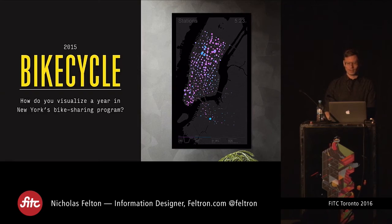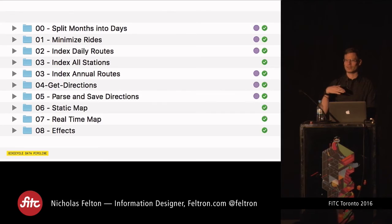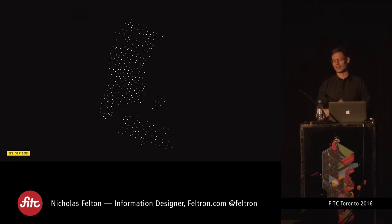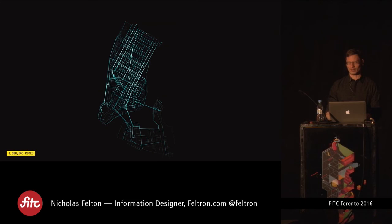For the Bike Cycle project — this visualization of the bike sharing system — I had to build a whole data pipeline to take the CSVs from the website and turn them into something usable. They give you monthly data, so I had to split it into days, minimize the rides, index everything to figure out what rides were possible, geocode all those rides, and finally pass everything through Google's route finding for bicycles. Only then could I finally start to see what the potential paths were that people had taken on their bicycles.